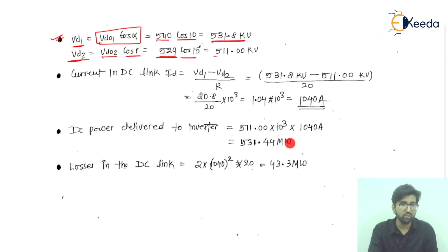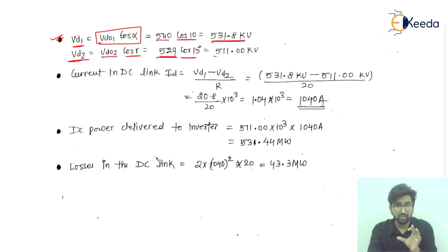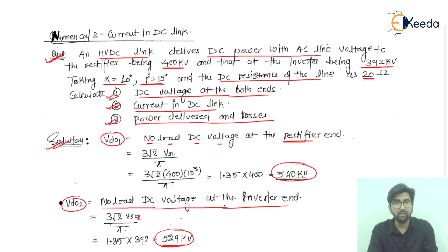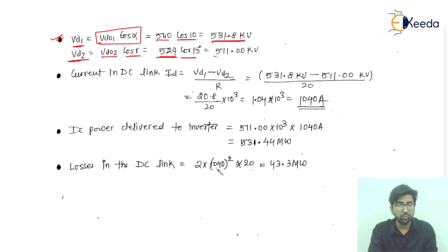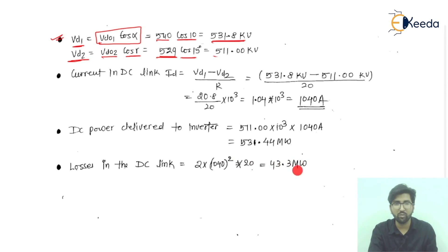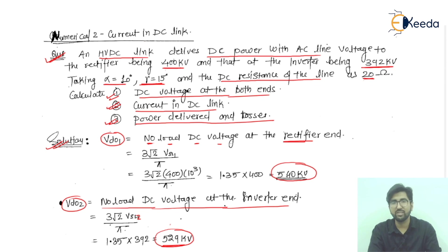For the losses in the DC link, we use: Losses = 2 × I_D² × R. The factor of 2 accounts for bipolar links, which we always consider. Substituting I_D = 1040 A and R = 20 ohms, the losses in the DC link equal 43.33 megawatts.